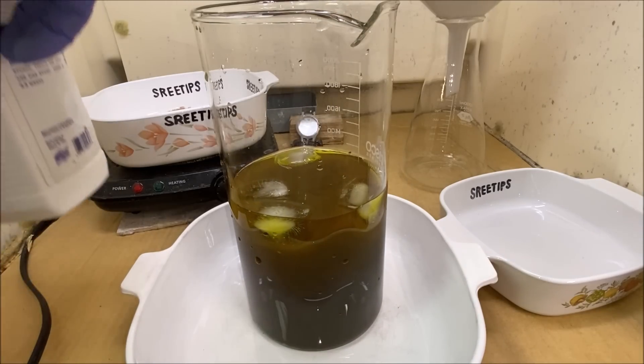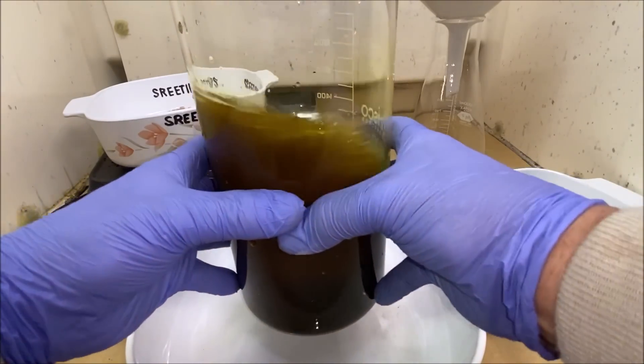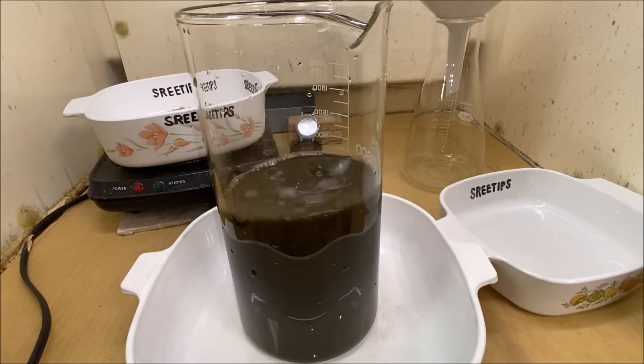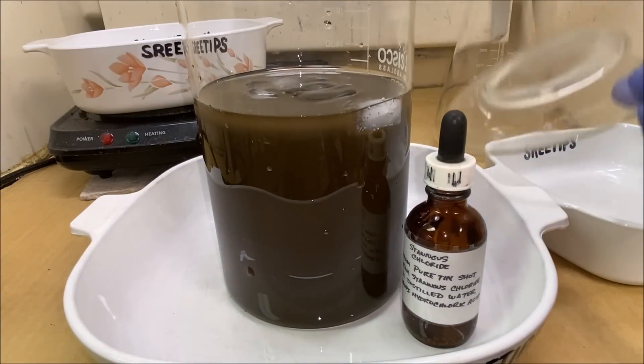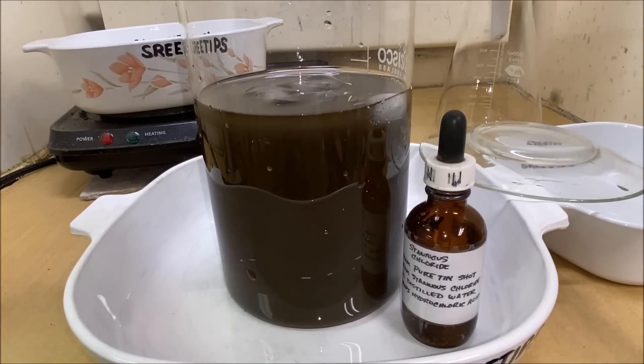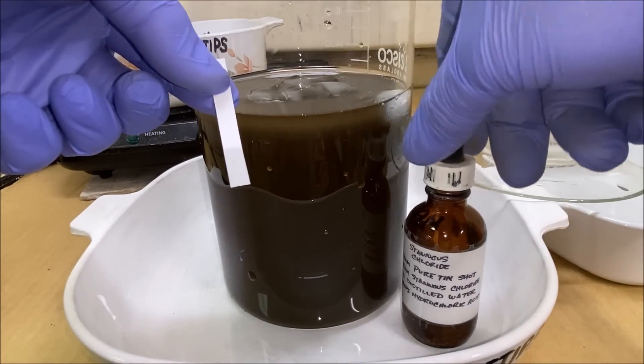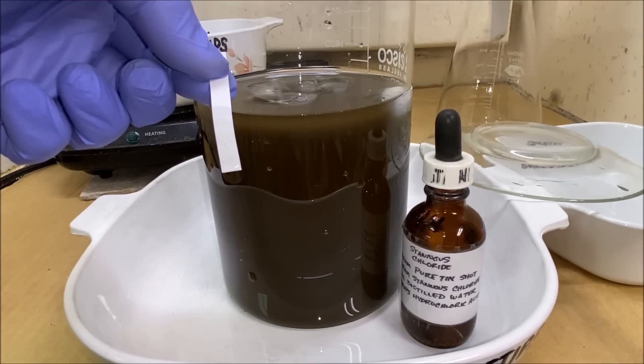That should just about do it for us, give us a stir. Let me reach in here to get a little of our solution on a piece of filter paper. We're going to test this with stannis chloride just to make sure we've got all the gold dropped out of that solution. And there you can see that negative stannis test means all the gold has been precipitated.